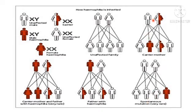Suppose the father is normal but the mother is a carrier — meaning one of her X chromosomes is affected. In that case, she may give birth to an affected male child, a carrier female child, and two normal children. So the probability is one affected male, one carrier female, and two normal children.